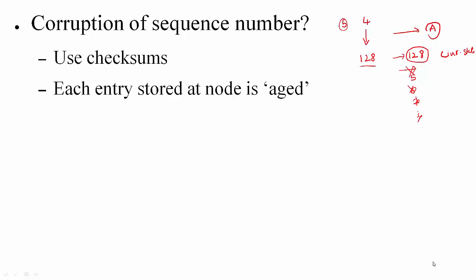Well, you should use checksums to the extent possible so that you can detect such corruptions. But checksums are not foolproof. So the way to handle that is each entry that is stored at a node is aged. For example, this entry will have a lifetime. Let's say you set it equal to 10 seconds. After this time, it is going to be cleared out. So it may happen that during this time, you may reject all these sequence numbers that are coming, but once this entry is removed, you will act on the sequence numbers that are coming later. So finally, you will get to the right state.